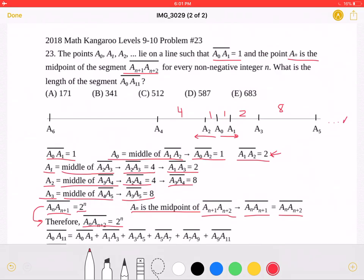So finding its length, a0a11 will be the length of a0a1, plus the length of a1a3, plus a3a5, and so on: a5a7, a7a9, and a9a11.